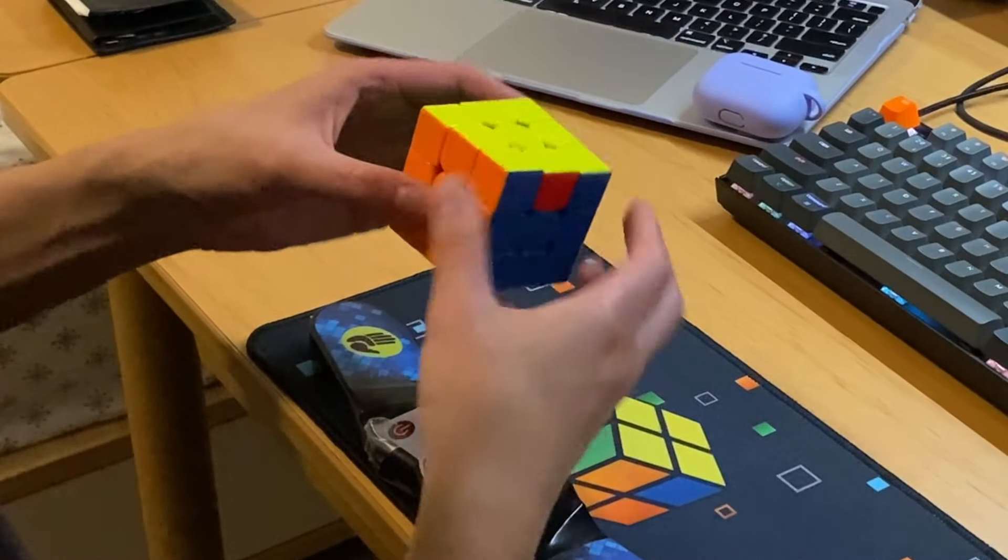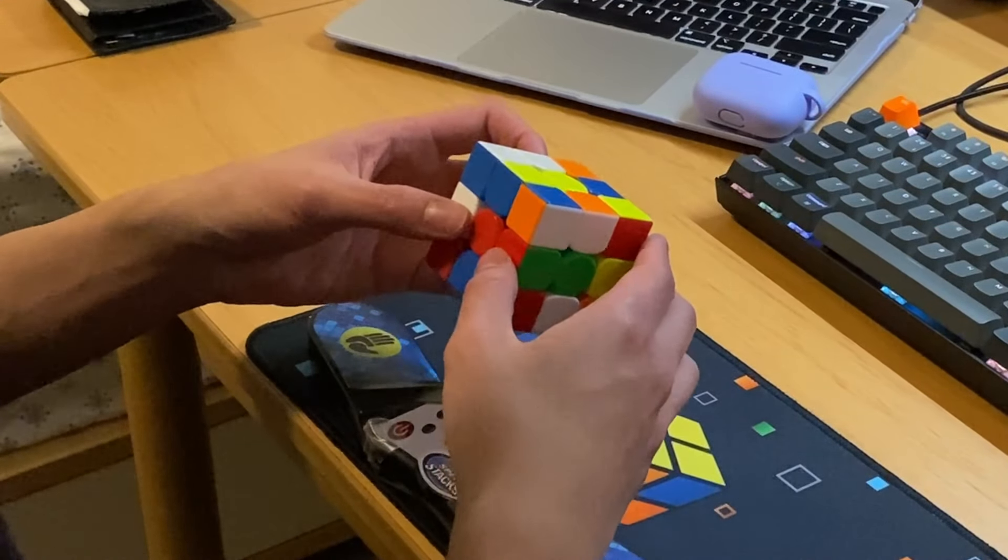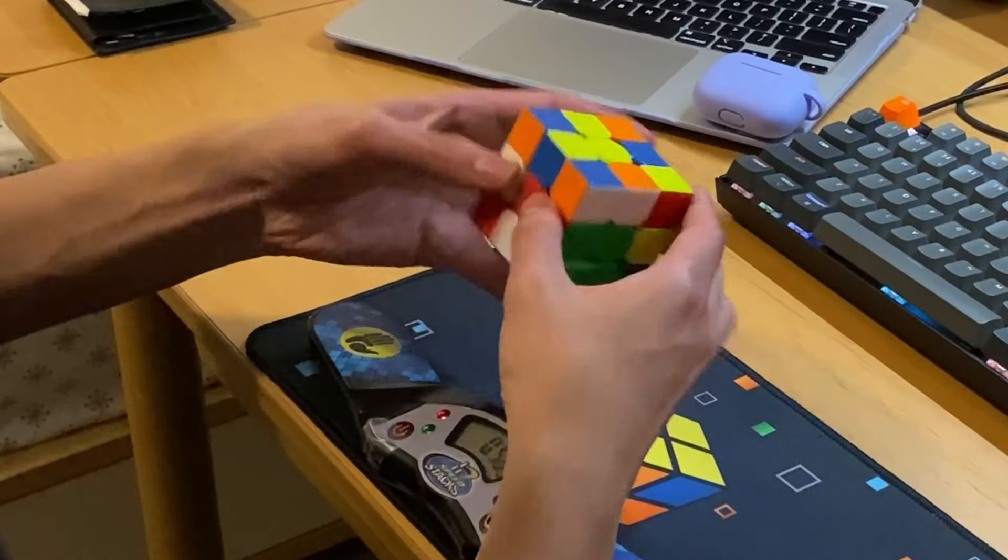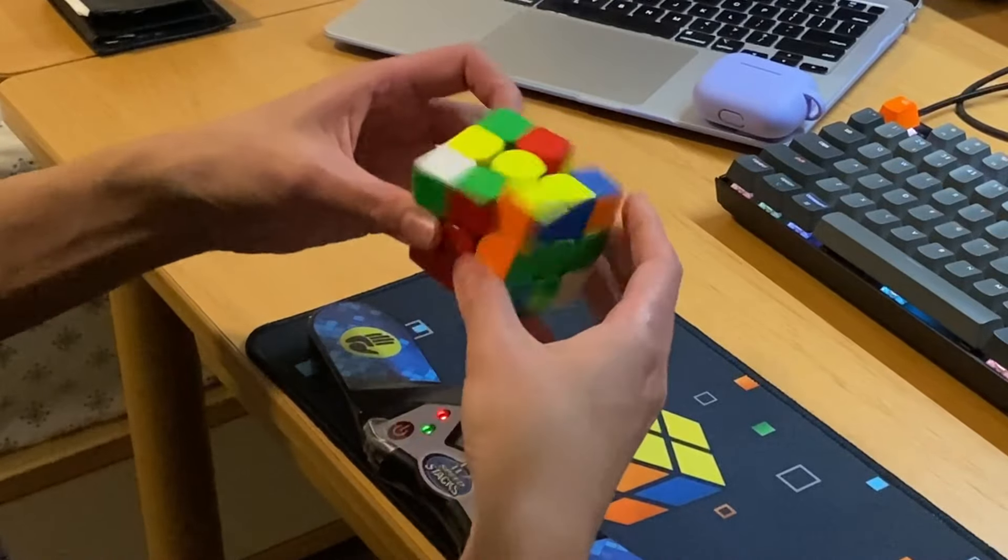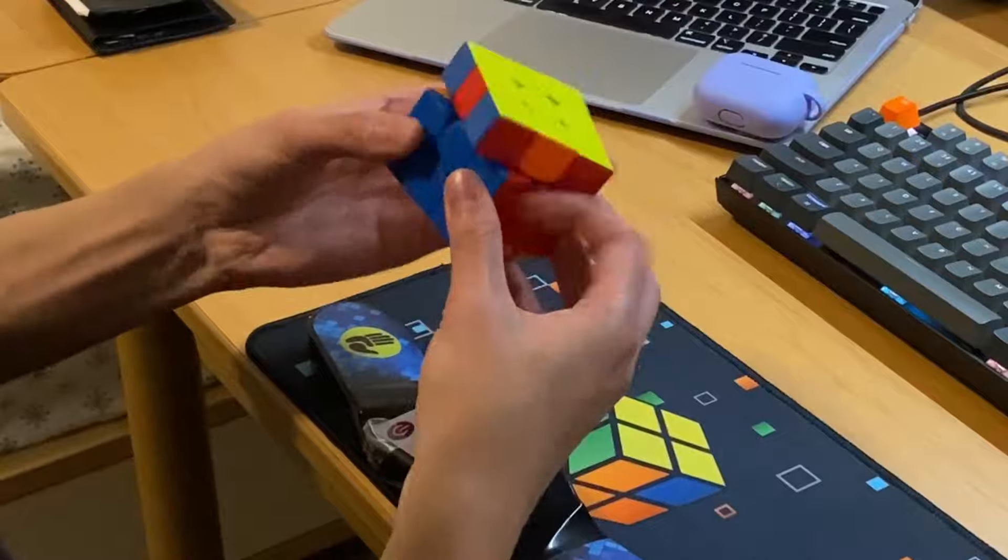First of all, I think the RS3M V5 has a really nice turning feel. It's crunchier and more tactile than other Moyu cubes, which I personally prefer. This is more of a preference thing—I know some people prefer very smooth cubes.